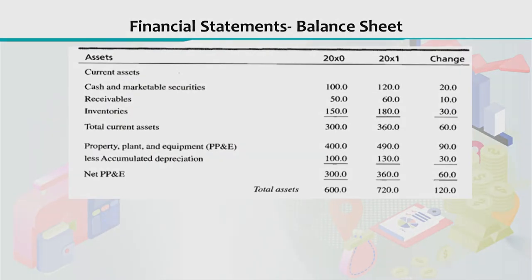In the balance sheet, there are two major components: the assets side and the liabilities side. When we report the assets, the first thing we report is the current assets. Current assets are those assets that you can convert into cash within a year — either cash you have now, or instruments and payments you are due to receive within a year. Under current assets, we have cash and marketable securities, where the time period is less than a year.